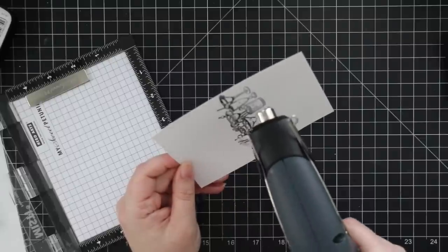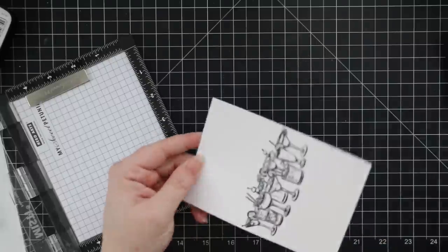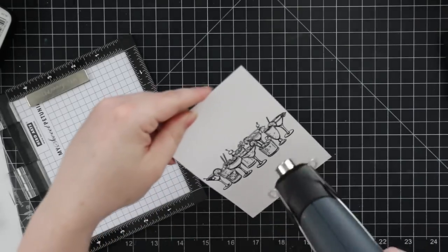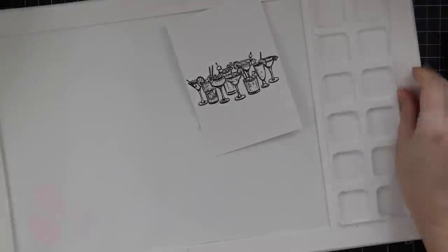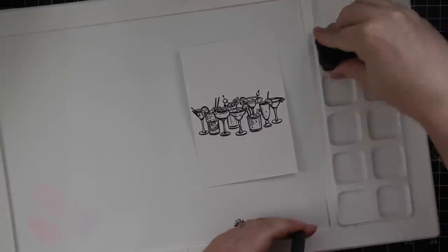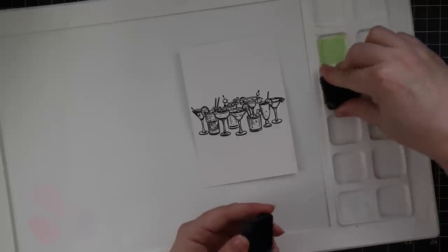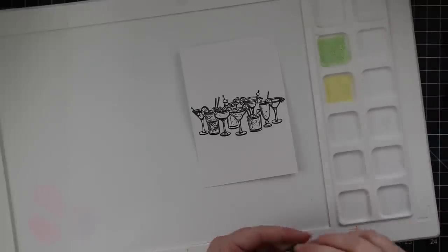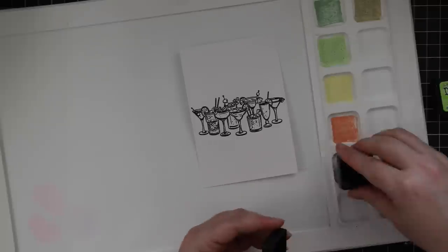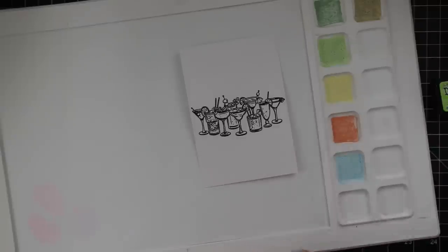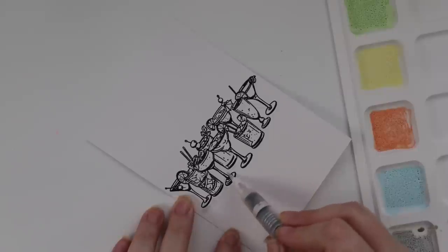You don't always have to emboss when using VersaFine Clair Nocturne ink. For me it's just force of habit, plus I like the raised edges because when I'm doing any sort of watercoloring, it keeps everything contained, especially if I'm working on Bristol smooth because everything kind of sits on top of it longer. This is a good cardstock as well if you are struggling with ink blending because everything sits on top for a little bit longer. There's like a coating on it.